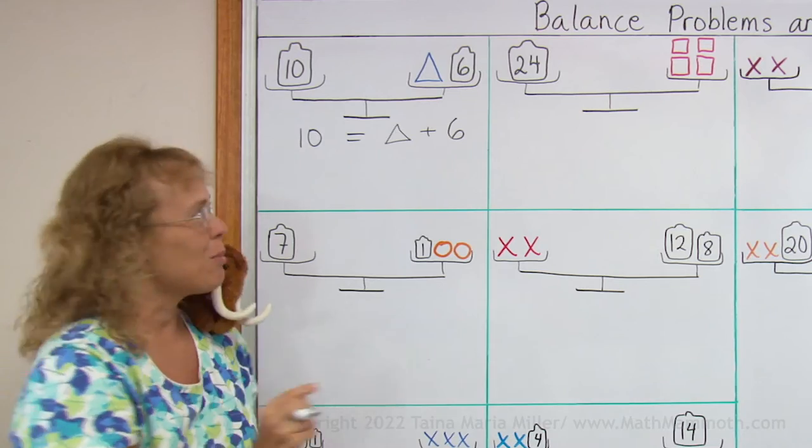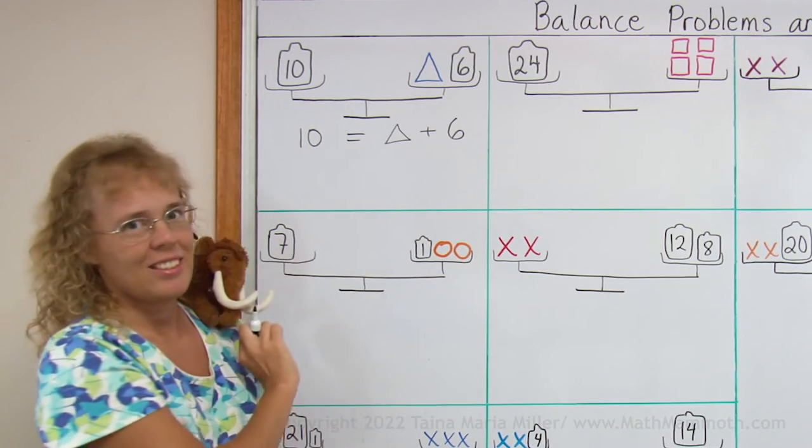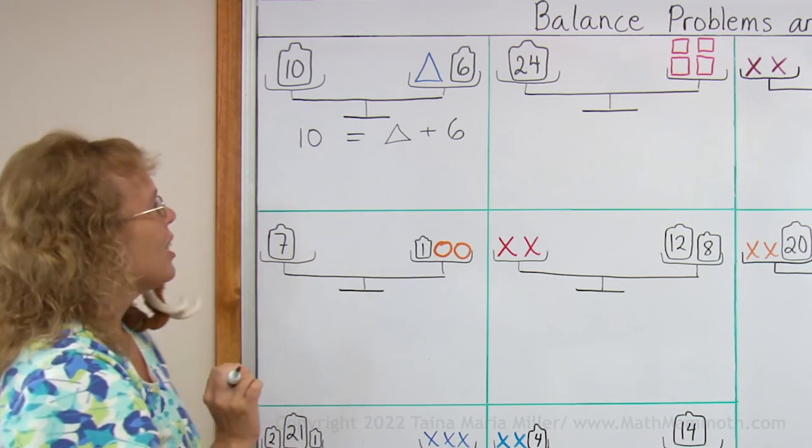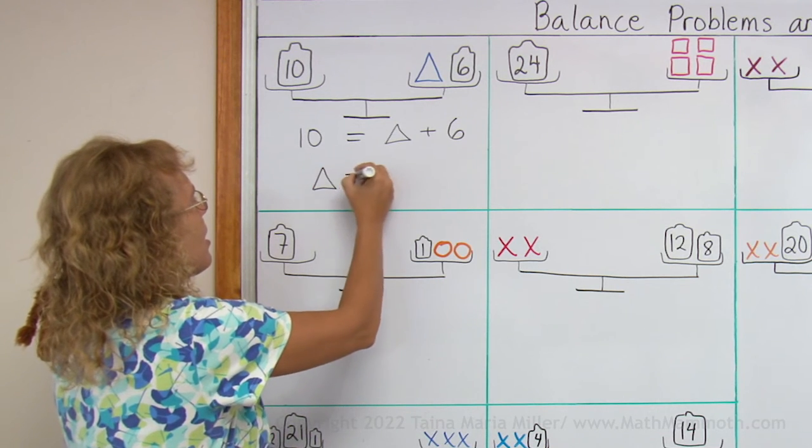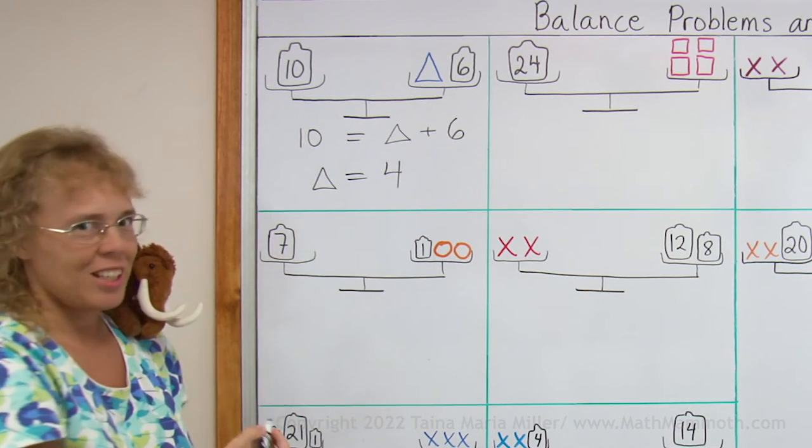And you can surely tell how much this triangle weighs, right? It weighs 4 kilograms. So that is solving the equation. My triangle equals 4, 4 kilograms.